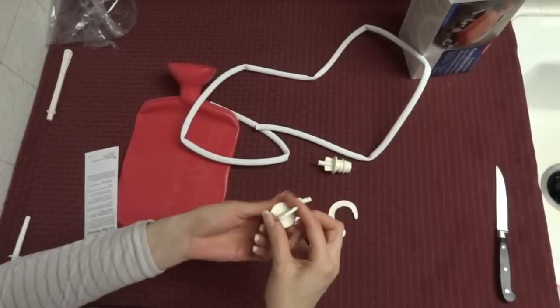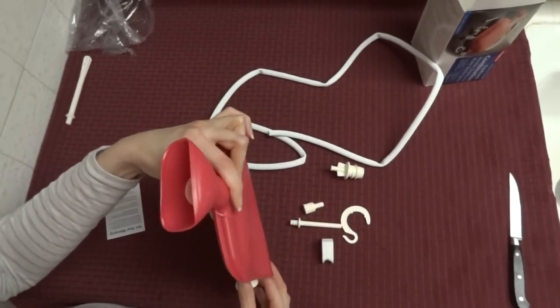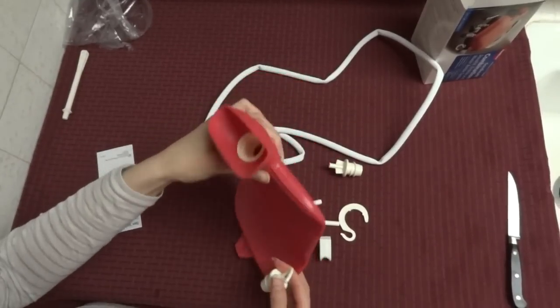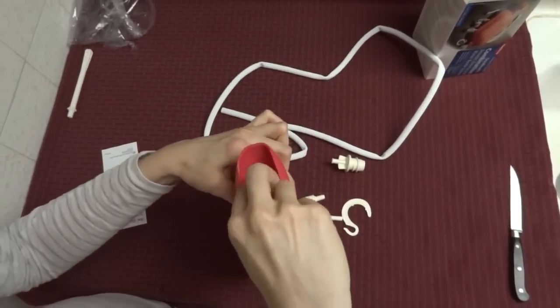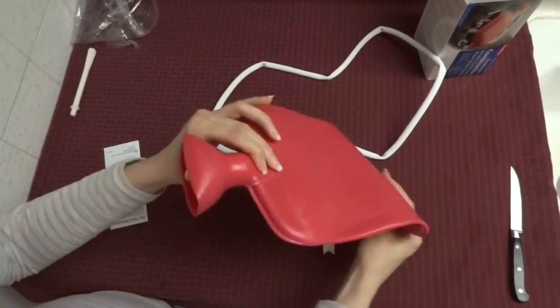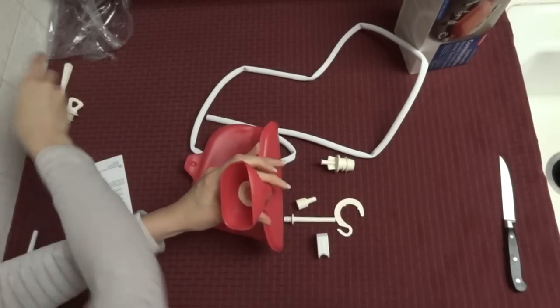This here is a lid. If you happen to want to fill this and seal it up, like if you're going to use it as a hot water bottle, which it's great for, just fill it with hot water and you can screw this on as a lid. Then carry this around with you. Otherwise, you're not going to need that for the enemas.